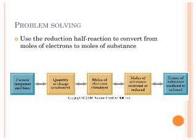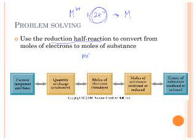And then we can use the reduction half reaction to go from moles of electrons to what we want. So let's say we have a metal ion and it takes two electrons to reduce it to the metal. Then we have this many moles of electrons, and if it takes two electrons to get to my substance, then I will just do that conversion.